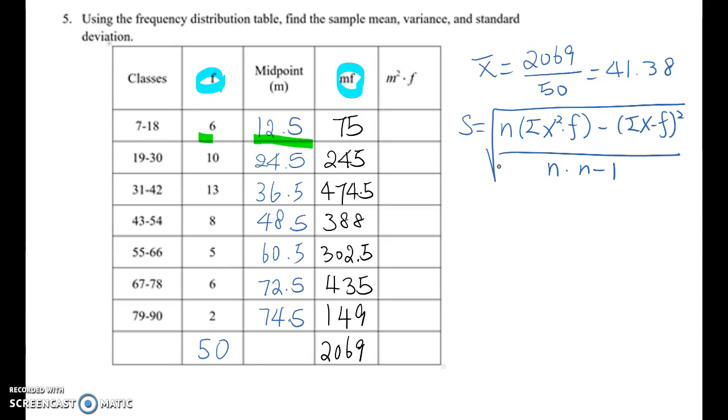So in this case, without square root, there will be variance s. So s-squared means n times sigma x-squared times f minus sigma x times f squared over n times n minus 1.